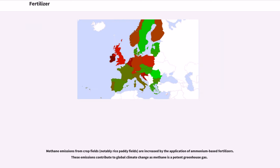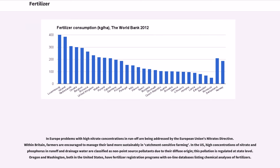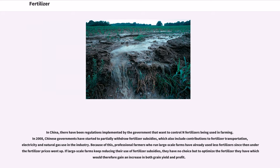Methane emissions from crop fields, notably rice paddy fields, are increased by the application of ammonium-based fertilizers, contributing to global climate change. In Europe, problems with high nitrate concentrations in runoff are being addressed by the EU's Nitrates Directive. Within Britain, farmers are encouraged to manage their land more sustainably in catchment-sensitive farming. In the US, high concentrations of nitrate and phosphorus in runoff and drainage water are classified as non-point source pollutants. Oregon and Washington have fertilizer registration programs with online databases listing chemical analyses of fertilizers. In China, regulations have been implemented to control fertilizers being used in farming, and in 2008, the Chinese government began to partially withdraw fertilizer subsidies.